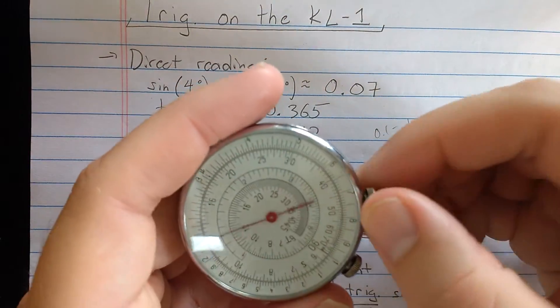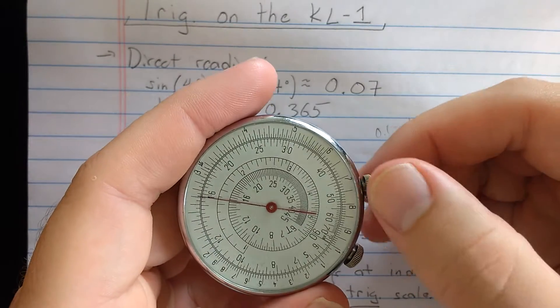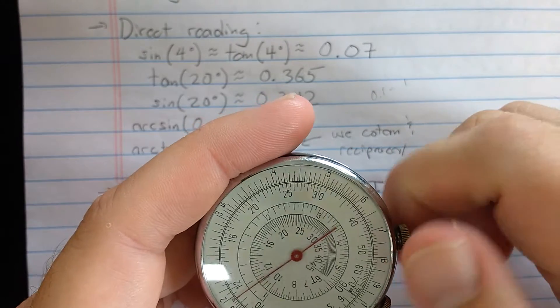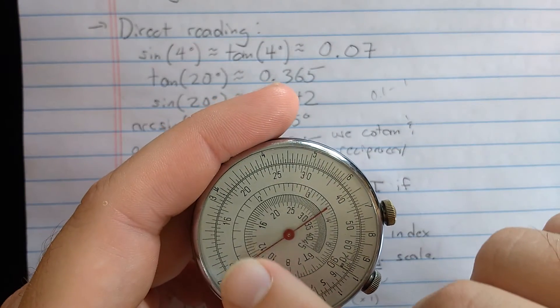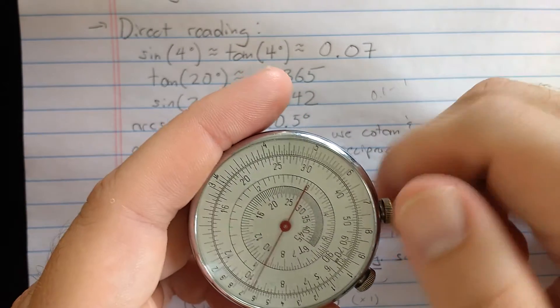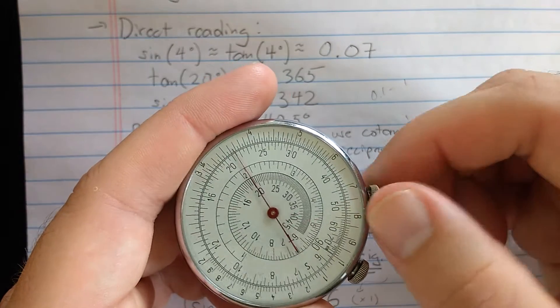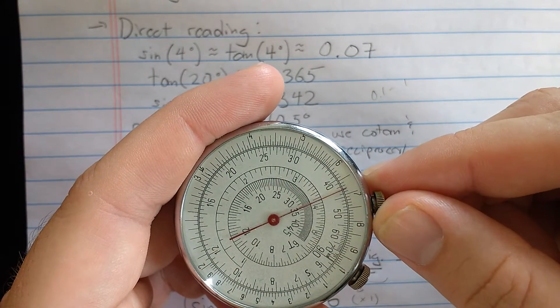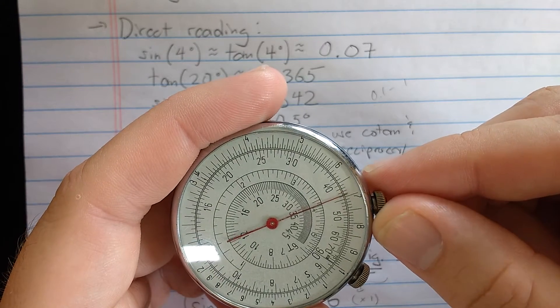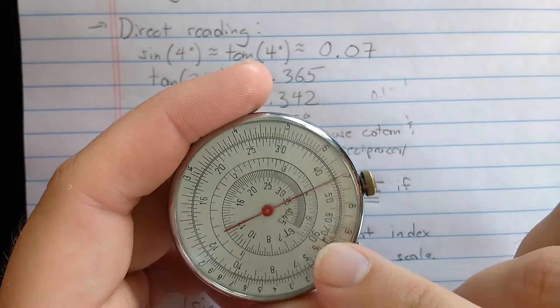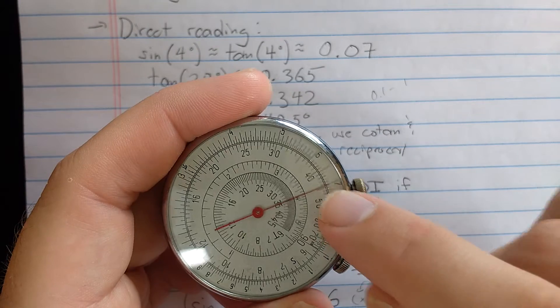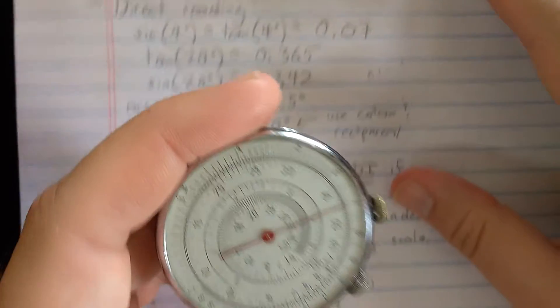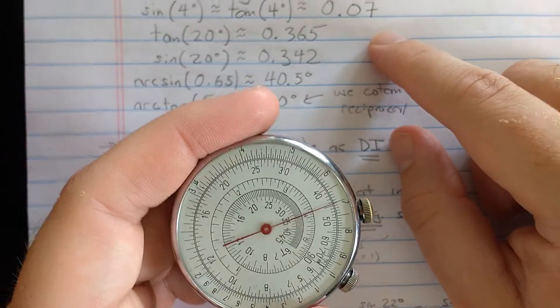Let's do some direct reading first. For sines and tangents of small angles, less than about 5.7, you use this first part of the spiral. So let's bring the indicator around to 4 degrees. You see it reads keyed to the outer scale, about 0.07. Remember, in that range, it should be 0.07.